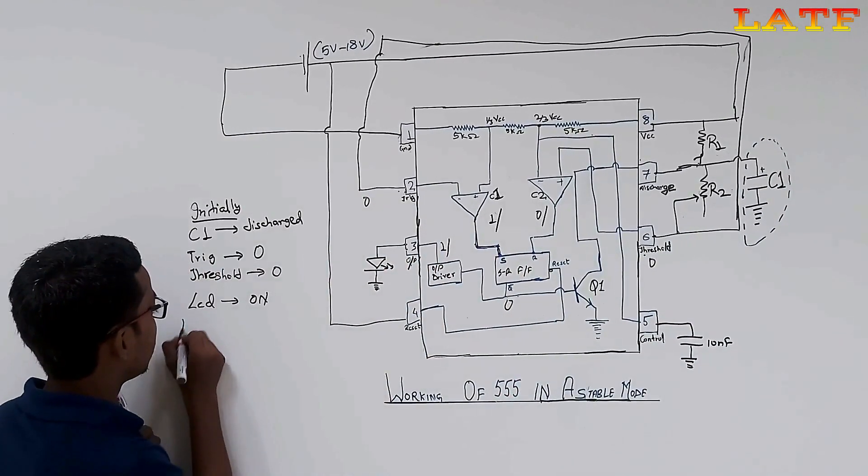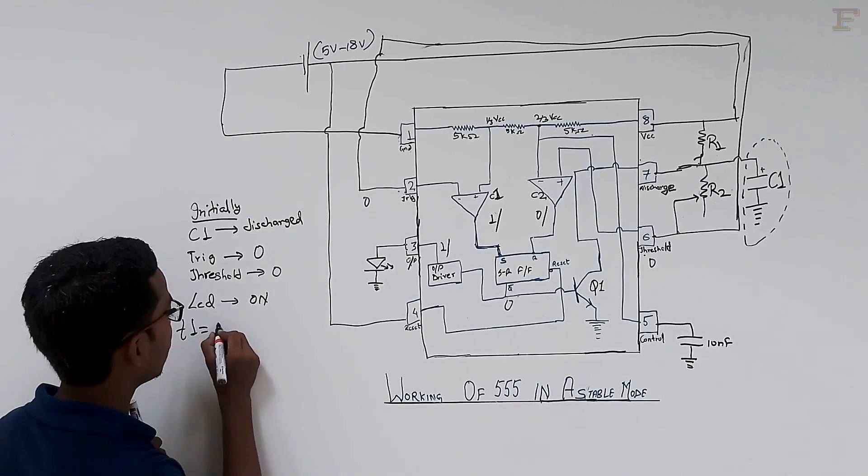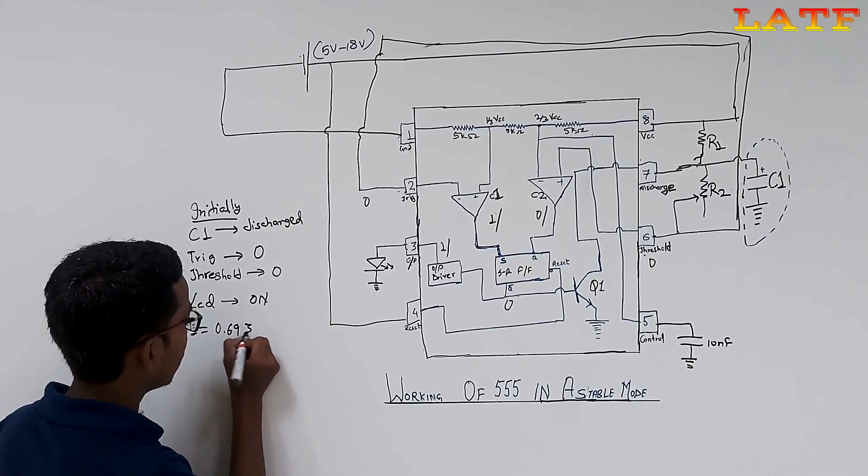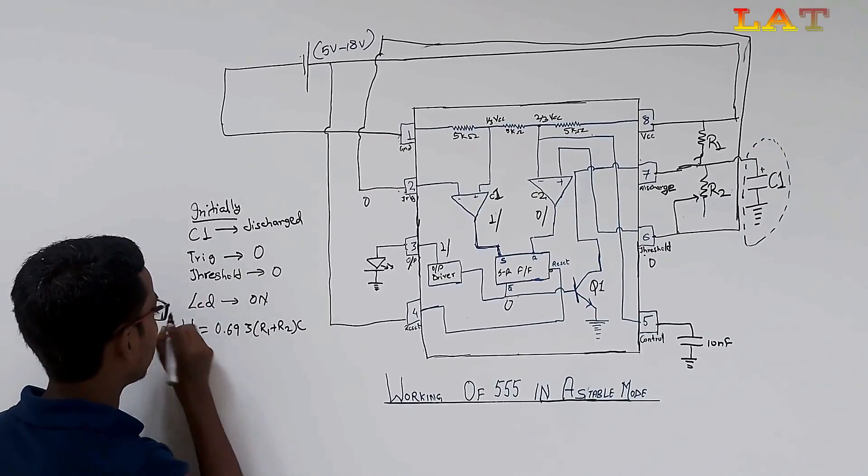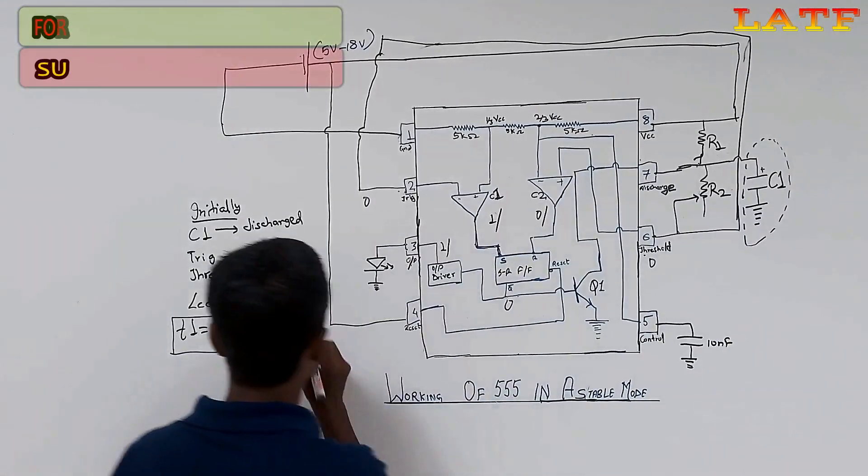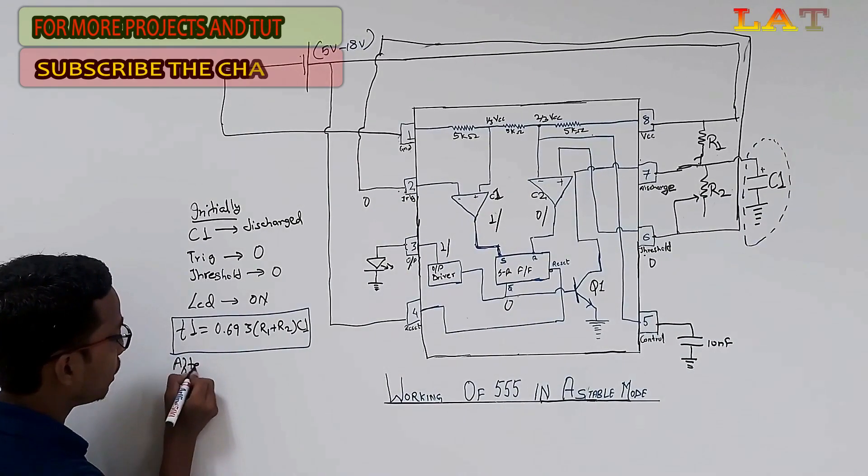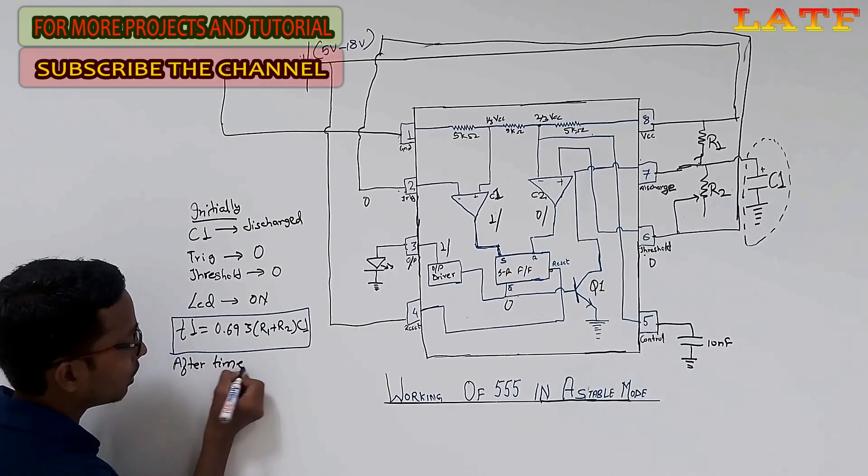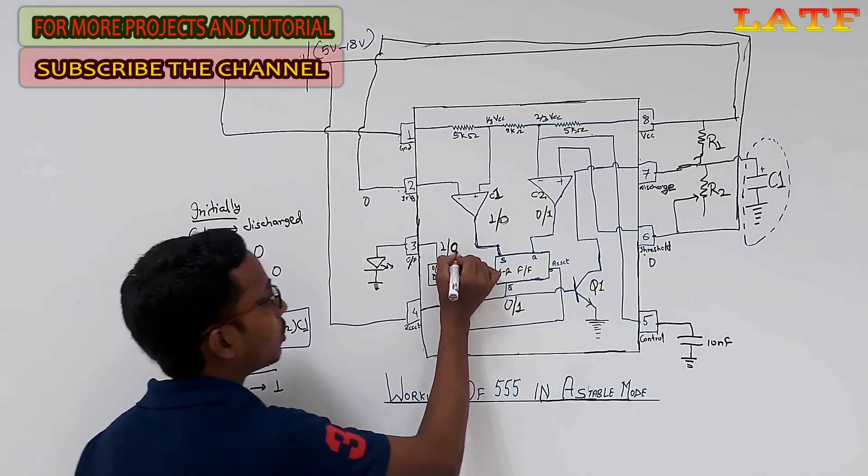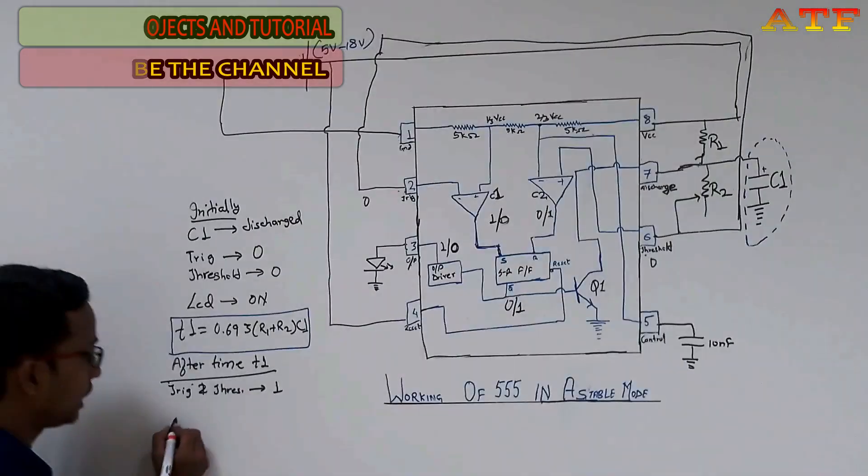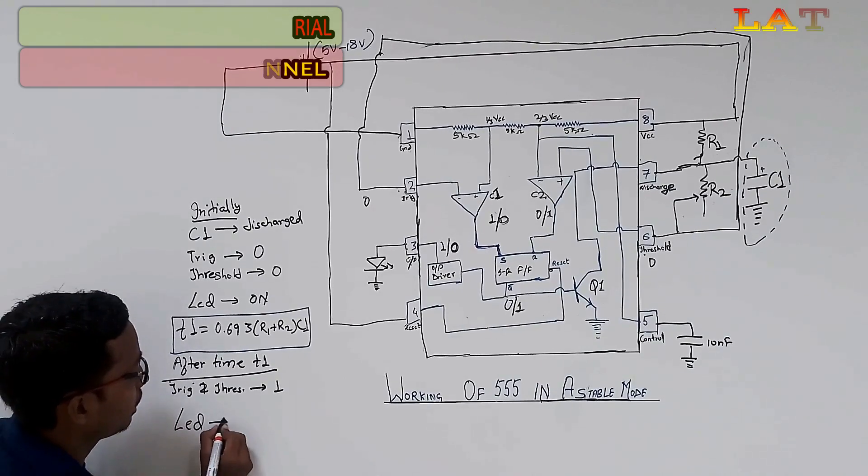Now, when the capacitor is charged above the 2 upon 3 VCC, then the voltage of non-inverting end becomes higher than the inverting end of the comparator C2. This makes the comparator C2 output high and reset the flip-flop and output of 555 chip becomes low. And, the LED will turn off for time T2.